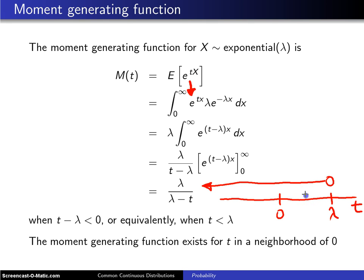We could arbitrarily choose the limits here to be negative lambda over 2 and positive lambda over 2 for our neighborhood. And the moment generating function does exist in this neighborhood about 0. So therefore, the moment generating function exists.